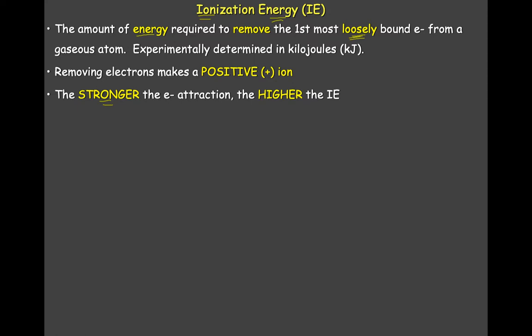Think about your favorite food — if you're eating it and you really like it, it's going to be very difficult for someone to take it away from you by force. They'll have to put in a lot of effort to do that. So if the nucleus is really attracting that electron, it'll be very difficult to take off that electron. If you want to write this in a reaction form, you would have a sodium atom plus the ionization energy going in, and then you're going to think about this being endothermic because it's going into the system.